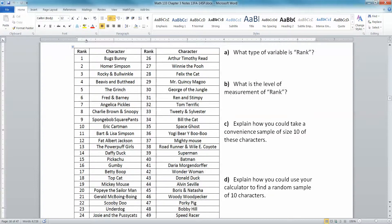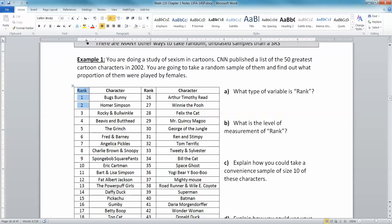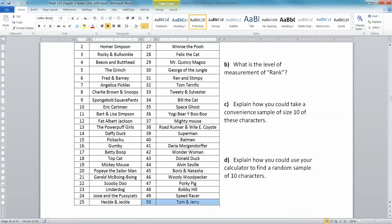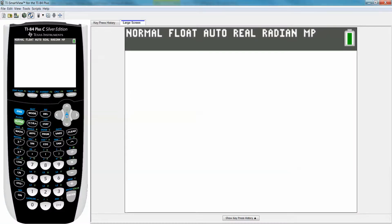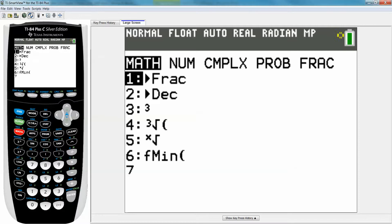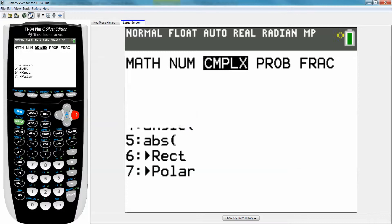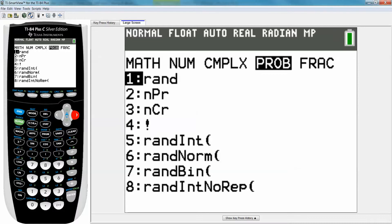Alright, so you can see I've got the characters ranked from 1, Bugs Bunny, who's the most awesome, to 50, Tom and Jerry. Alright, so I'm going to go to my calculator. I'm going to press Math, which is over here on the left, the Math button. And you want to move to the right to the probability menu, PRB in the old calculators, and the new calculator system is PROB, probability. Alright, PRB or PROB.